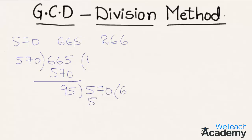So by subtracting we get the remainder 0. The last nonzero remainder is the greatest common divisor. So in this case, 95 is the greatest common divisor of 665 and 570.